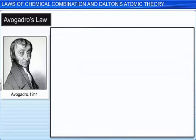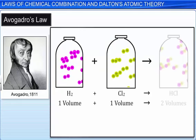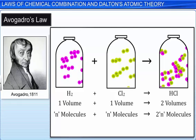For example, one volume of hydrogen combines with one volume of chlorine to form two volumes of hydrogen chloride gas. For this to be true, the number of molecules in one volume of hydrogen, N, will be equal to the number of molecules in one volume of chlorine, N. During the reaction, they will form two volumes of hydrogen chloride gas which will contain N plus N, that is 2N, number of molecules — meaning the number of molecules in one volume of hydrogen chloride is equal to N. Thus, proving Avogadro's Law.